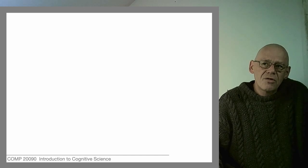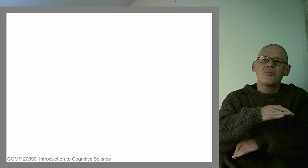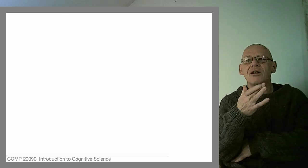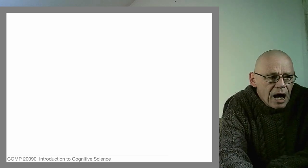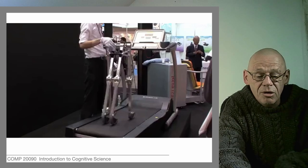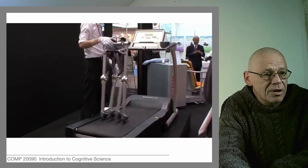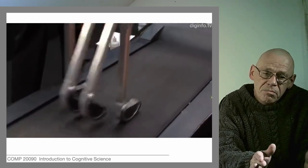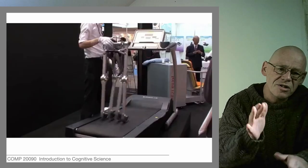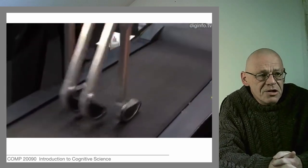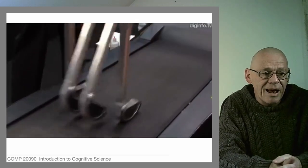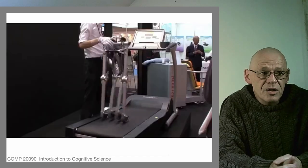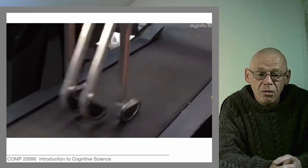By studying this we realize that an awful lot of movement is solved through physics, and this has led to developments in robotics. Here's an example of a passive walker built using techniques developed from observations like that cat. This has no controller whatsoever — no brain, nothing organizing the parts. It's built so that the legs, when placed on a treadmill, will self-organize into a regular walking pattern.